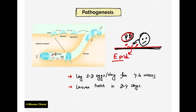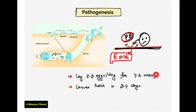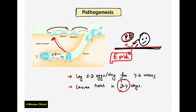This is the epidermis. The female mite burrows into the epidermis. She lays 2 to 3 eggs per day and lives for 4 to 6 weeks until she dies. After 3 to 4 days, a larva is formed. The larva becomes a nymph, and the nymph becomes an adult mite, which spreads throughout the body.